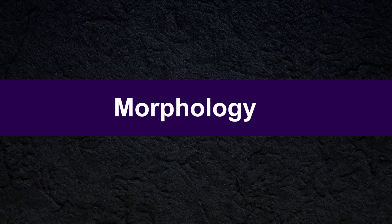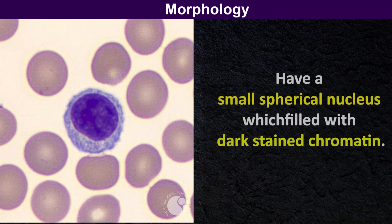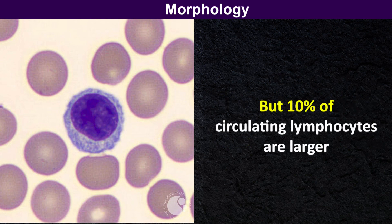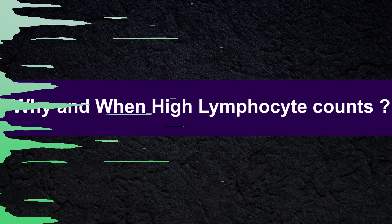Lymphocytes are the smallest type of white blood cells. They have a small spherical nucleus filled with dark-stained chromatin. Their size is similar to that of a red blood cell, but 10 percent of circulating lymphocytes are larger than small lymphocytes. The round nucleus is covered with a thin rim of pale blue cytoplasm.